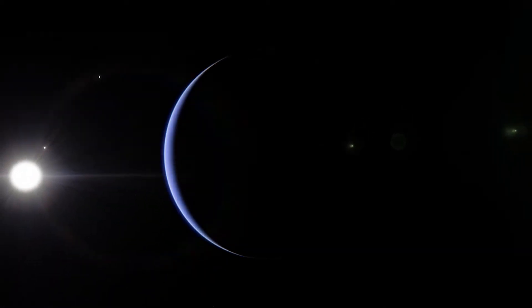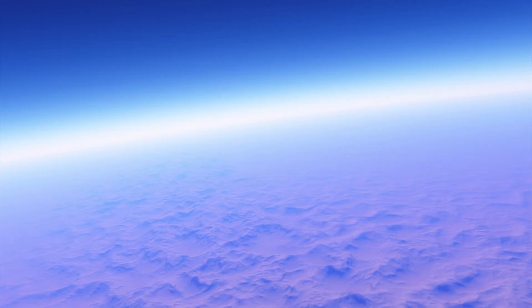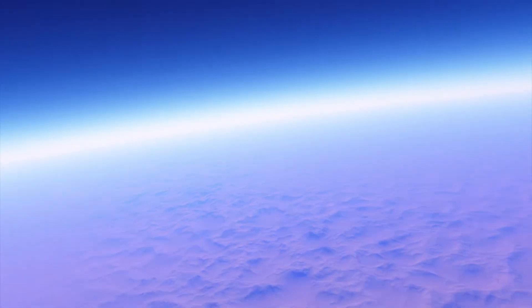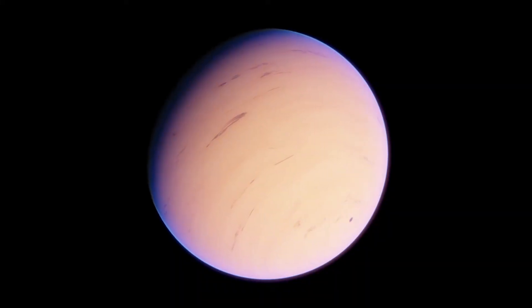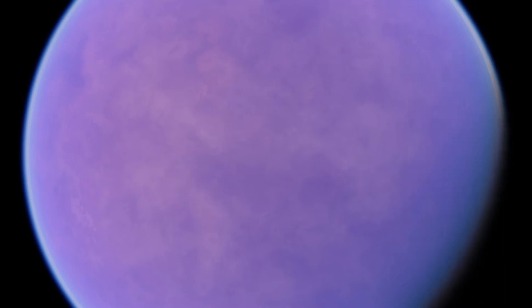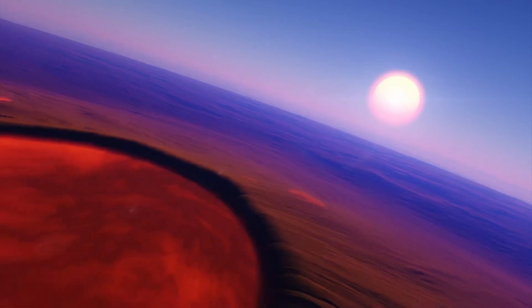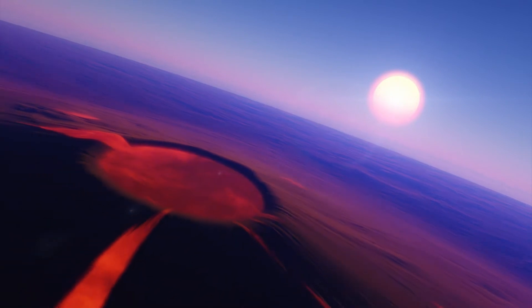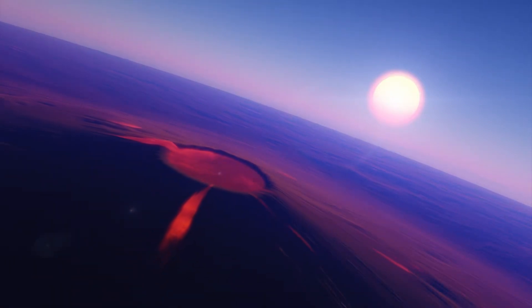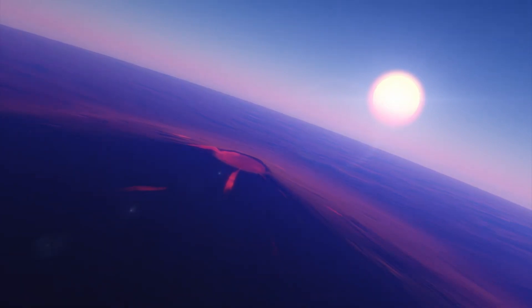This was the first compact solar system discovered by Kepler and it revealed that a system can be tightly packed with six planets within the orbit of Mercury and still be stable. It gave us a whole new look into planet formation ideas and suggested that multiple small planet systems like ours may be common.